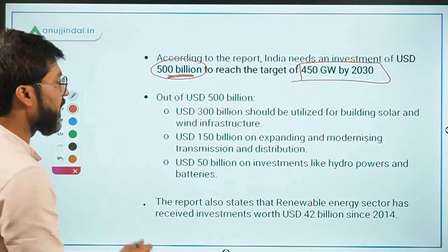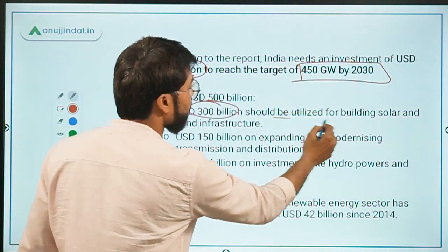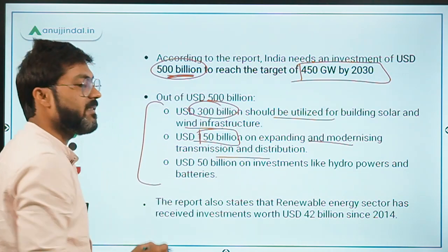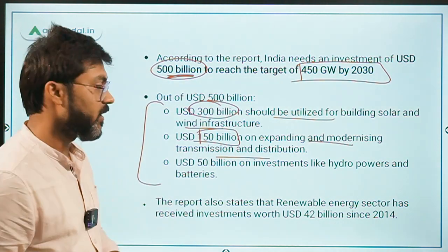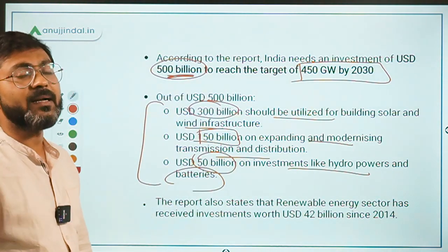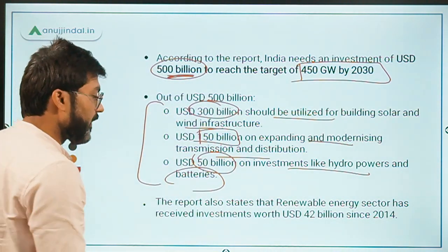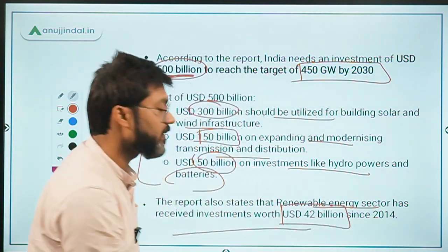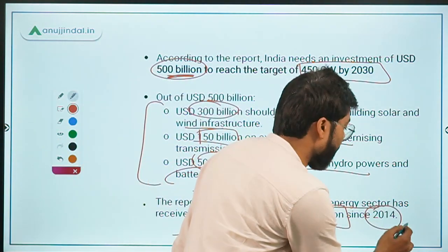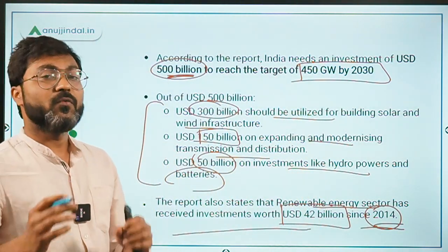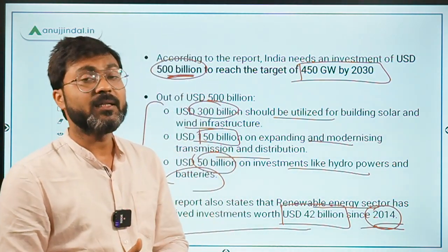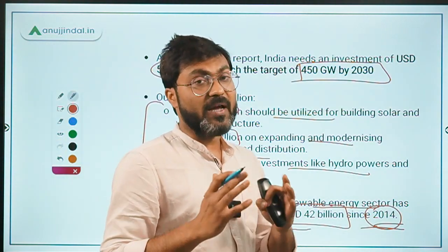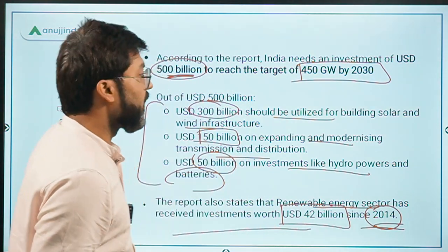Out of the 500 billion dollars: 300 billion should be utilized for building solar and wind infrastructure; 150 billion on expanding and modernizing transmission and distribution of renewable energy; and 50 billion on investments like hydro power and batteries. The report also notes that the renewable energy sector has already received investment worth 42 billion dollars since 2014.